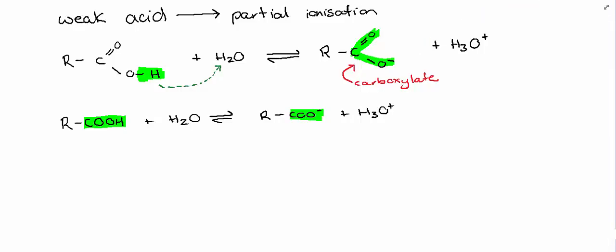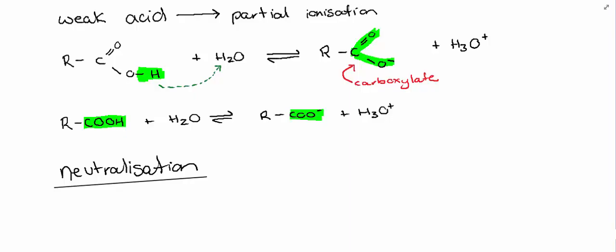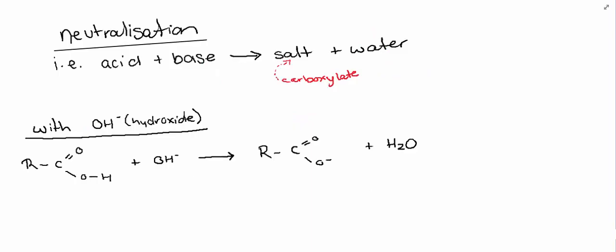Now because a carboxylic acid is an acid, it will undergo neutralization reactions. And the basic rule to remember with most neutralization reactions is an acid and a base is going to give you a salt and water. And in this case, the salt is going to be a carboxylate salt. So when your carboxylic acid is reacting with a hydroxide ion, we can see that it donates this hydrogen to our hydroxide ion to give us our water. And then we are left with the carboxylate group here.